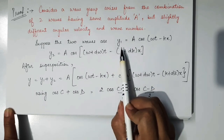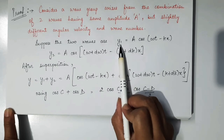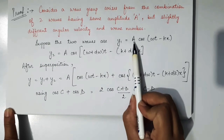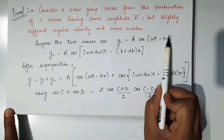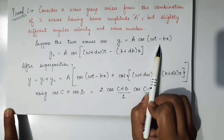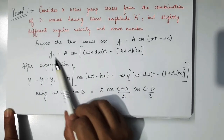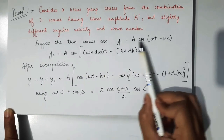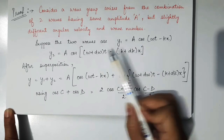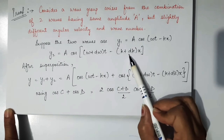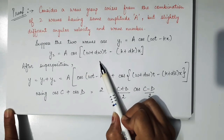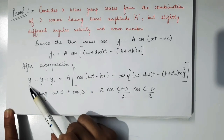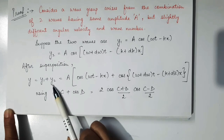The displacement of the two waves is given by y1 and y2, each having the same amplitude A. The first wave: y1 = A cos(omega t − kx). The second wave has angular velocity (omega + d omega) and wave number (k + dk), so y2 = A cos((omega + d omega)t − (k + dk)x). These two waves superimpose upon each other, and the displacement of the resultant wave is the sum of the displacements of the two waves.